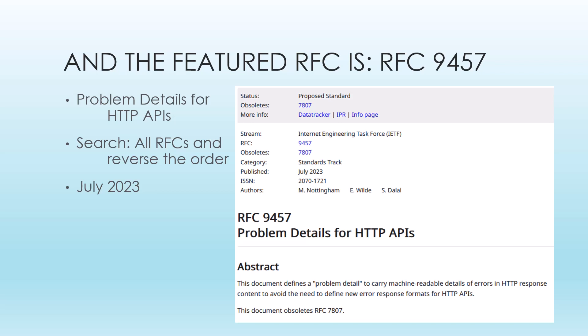You can see that this RFC obsoletes 7807. The way you would search for these kinds of things, you just go to the IETF.org site and do a search in reverse order. You can see that this dates from July 2023.